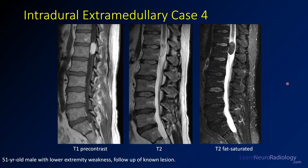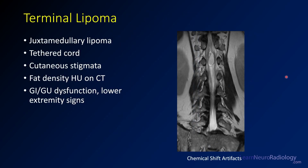Case four: a 51-year-old man with lower extremity weakness and a history of a known lesion. On pre-contrast T1, there is a T1-bright lesion. On T2 it's approximately isointense to CSF, with a subtle rim of darkness around it. On fat-saturated imaging, there is near-complete suppression of signal within the lesion — confirming this is a fat-containing lesion. That rim of darkness is the chemical shift artifact. A fat-containing lesion along the conus can be a lipoma, dermoid, or teratoma. This one is a lipoma; they can be associated with tethered cords and cutaneous stigmata.